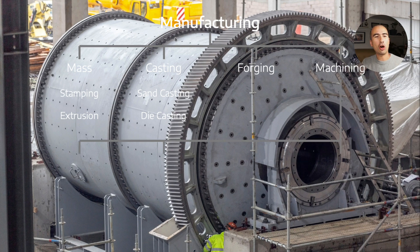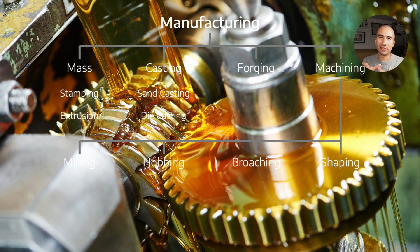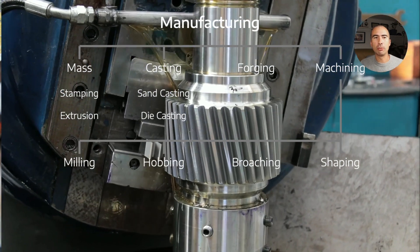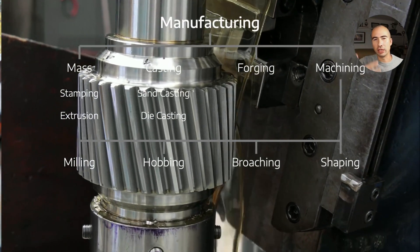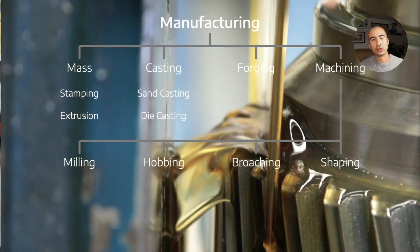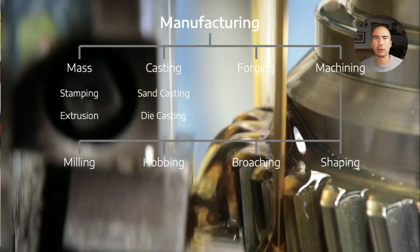Moving on to machining, there are many different methods: milling, hobbing, broaching, and shaping. Milling and hobbing are created through a rotating tool — you can see the hob, which is the cutting gear, on the left. Milling is very similar except that only one tooth is doing the cutting and you have to re-index the blank each time. Broaching and shaping are more linear methods — they scrape up and down, a bit like a piston in an engine, to cut out the tooth profile. You get different surface finishes based on the manufacturing process used.